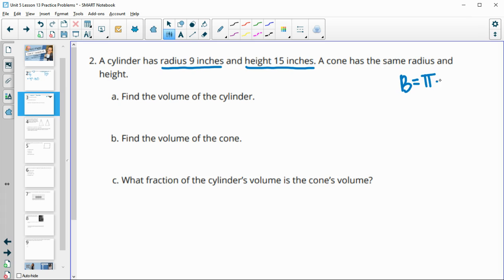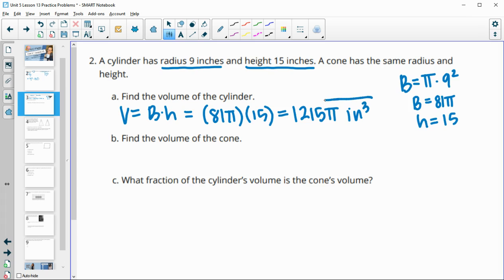To find area of a circle, we do π times the radius squared. So our base area is 81π. Then they also give us our height of fifteen. So to find the volume of a cylinder, we just do base times height. So we'll be doing 81π times fifteen. And I'm not going to multiply the π out, I'm just going to leave it. So eighty-one times fifteen gives me 1,215π inches cubed for that volume.